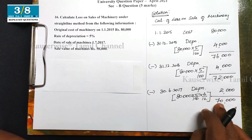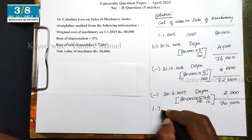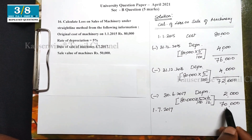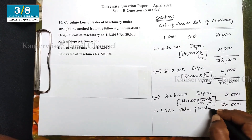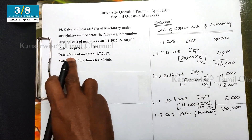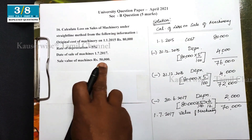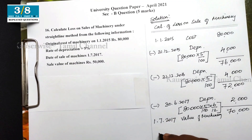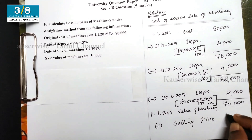70,000 is the value of machinery as on the date of sale, 1st July. On the date of sale the value is 70,000. Now we compare with the selling price. Sale value of machinery is 50,000. So we subtract the selling price of 50,000.